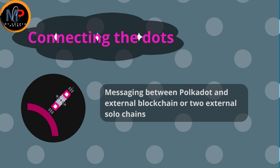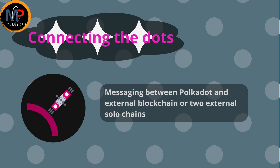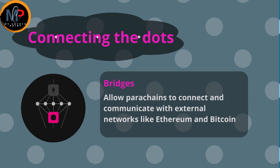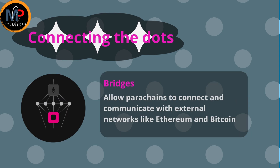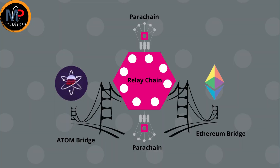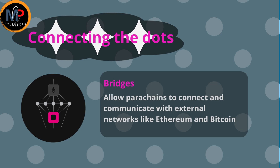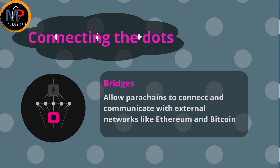Finally, this represents communication between Polkadot and external networks. Parachains can interact between each other, between relay chain and Parachain, between Polkadot and external networks, or between two solo Parachains outside of the Polkadot network. This is possible by using Bridges, which allow Parachains to connect and communicate with external networks like Ethereum or Bitcoin.